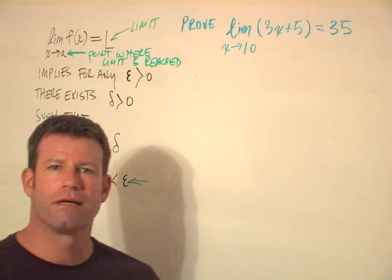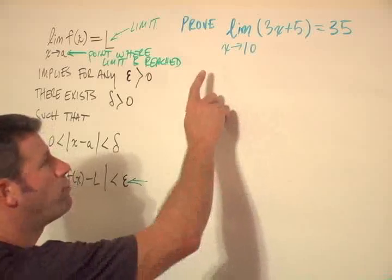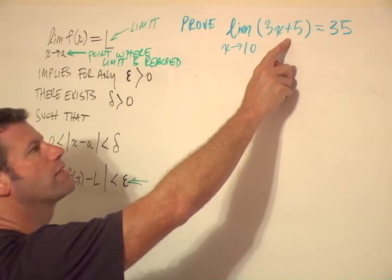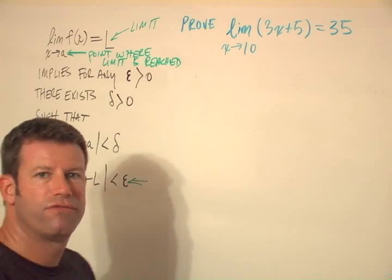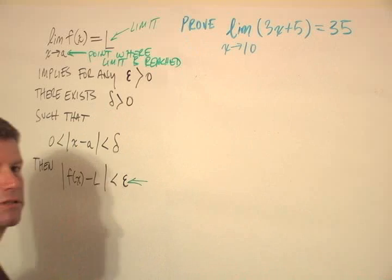Okay, so now we're going to show you how to solve one of these problems. They all have the same formulation, almost verbatim to this statement here. Prove the limit as x goes to 10 of some function. Here it's 3x plus 5 equals 35, using the definition of a limit, using these deltas and epsilons.